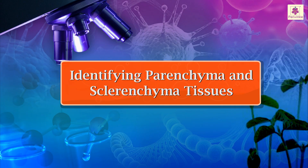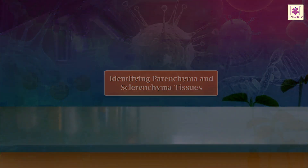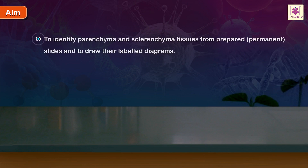Identifying Parenchyma and Sclerenchyma Tissues. AIM: To identify Parenchyma and Sclerenchyma tissues from prepared permanent slides and to draw their labelled diagrams.